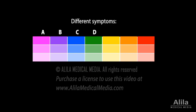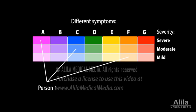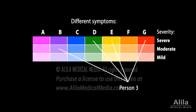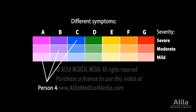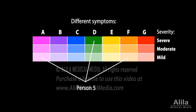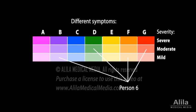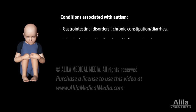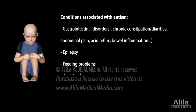The word spectrum means there is a great array of symptoms with various degrees of severity. Among people diagnosed with autism, there can be a wide range of intellectual and learning abilities from highly capable to severely challenged. A number of other conditions tend to occur more often in autistic people, including gastrointestinal disorders, epilepsy, feeding problems, anxiety, and depression.